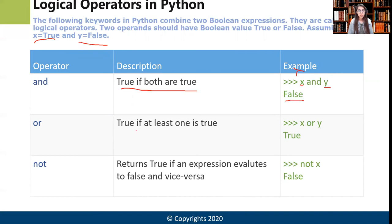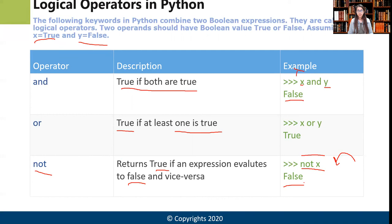The 'or' operator returns true if at least one of the expressions is true. So 'True or False' gives us True. The 'not' operator returns true if an expression evaluates to false — it works in the opposite direction. 'not True' gives False. If it were 'not False', the output would be True.